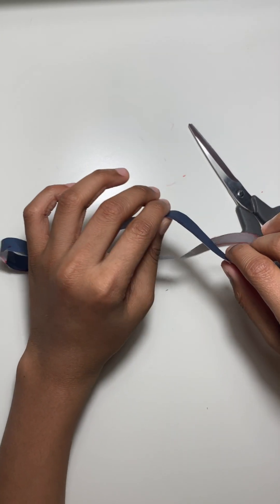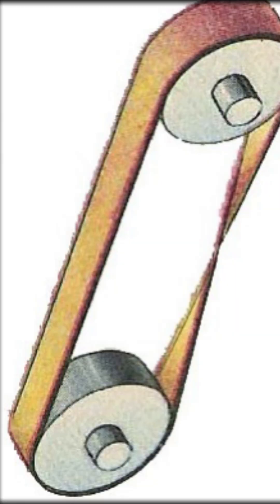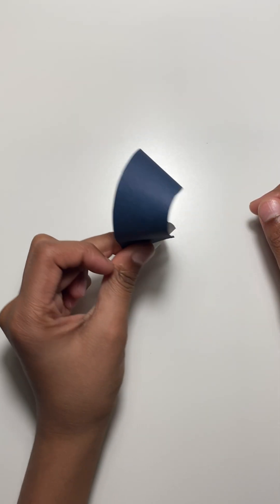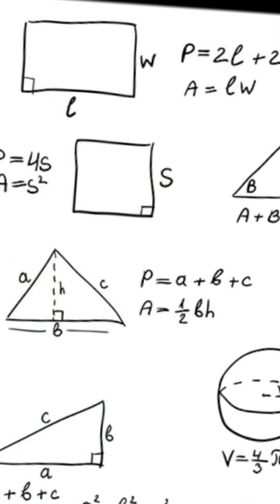The Moebius strip's unique property arises from its one-sidedness. The Moebius strip is a popular teaching tool to introduce concepts in topology and geometry.